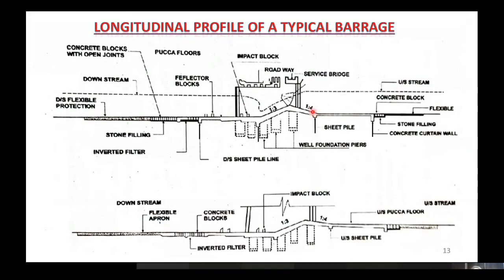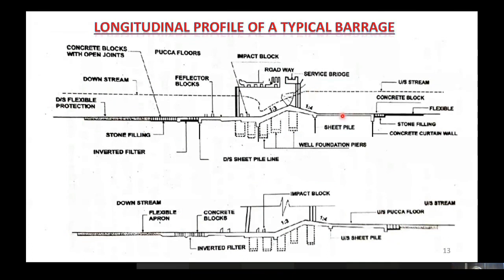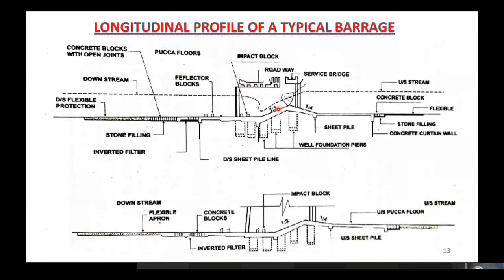The upstream concrete floor is an RCC slab provided between the intermediate sheet pile and the flexible apron on the upstream side. Its main purpose is to protect the middle portion where the piers, gates, and bridge are located — the pier bridge also rests here. The second sub-component is the crest, which is the highest part of the weir, and has a certain width.